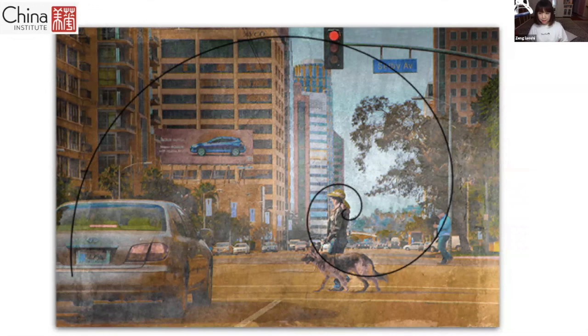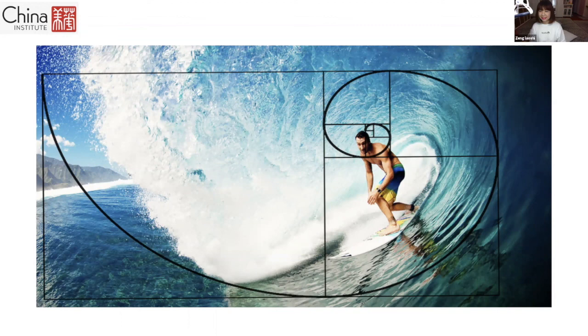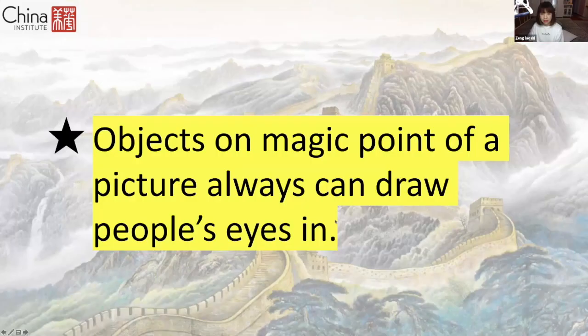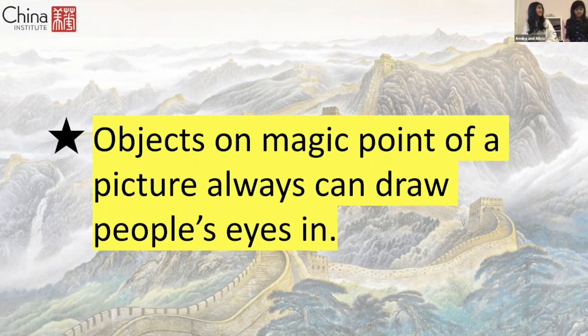Perfect example again — you see the man, right? And we automatically see him there. That is the concept, that's the result: objects at the magic points of a picture always draw people's eyes in. So if you want to draw something to show your audience, just keep in mind — find the magic points and draw something there.